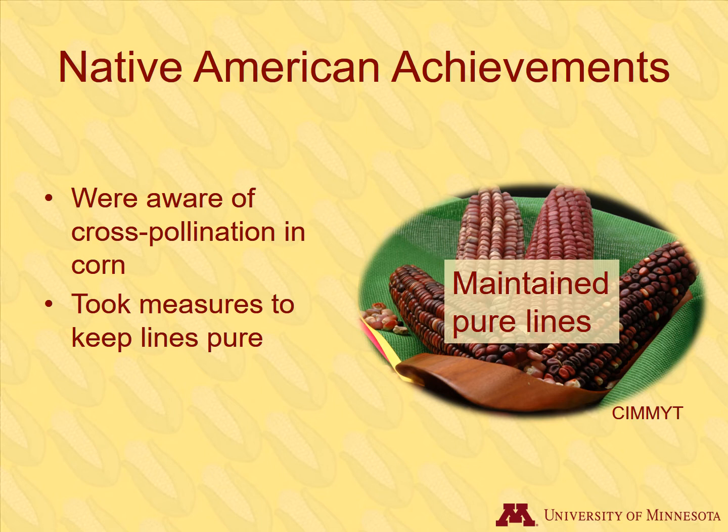If you watched our Biology of Corn lesson, you might remember that corn is a cross-pollinating species. However, cross-pollination may not be desirable to plant breeders. Native Americans knew how to isolate corn fields so that one type of corn did not pollinate another type. This kept breeding lines pure and allowed them more control over the breeding process.